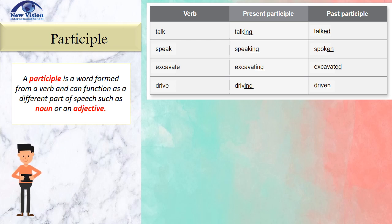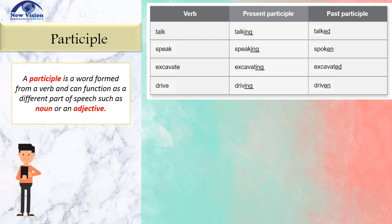The present participle is formed by adding -ing to the verb. For regular verbs such as talk and excavate, we form a past participle by adding -ed. For irregular verbs such as speak and drive, past participles come in different forms.